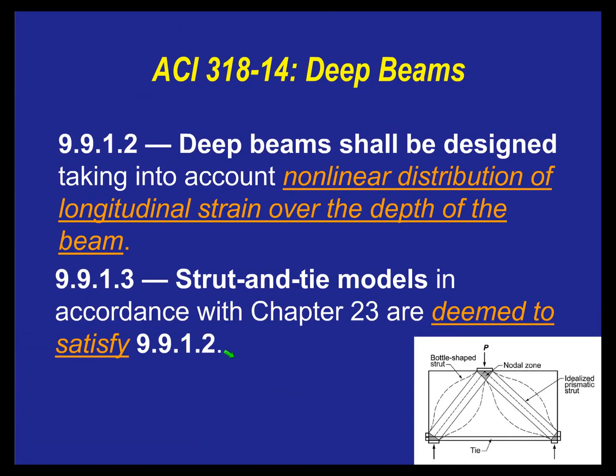According to ACI 318-14, deep beams shall be designed taking into account non-linear distribution of longitudinal strain over the depth of the beam. What does that even mean? It certainly means I can't plug it into ADOSS, ADAPT, S-Frame, or any other computer program, because typically those assume linear distribution of longitudinal strain over the depth — they don't give a non-linear solution.